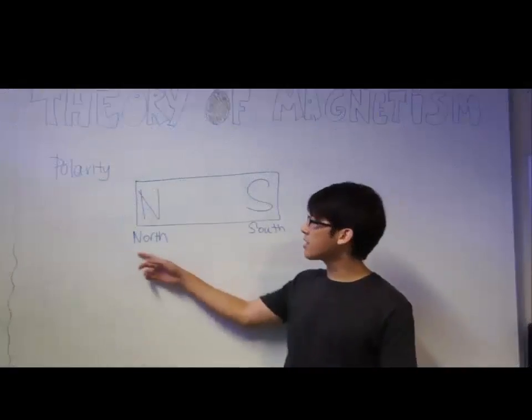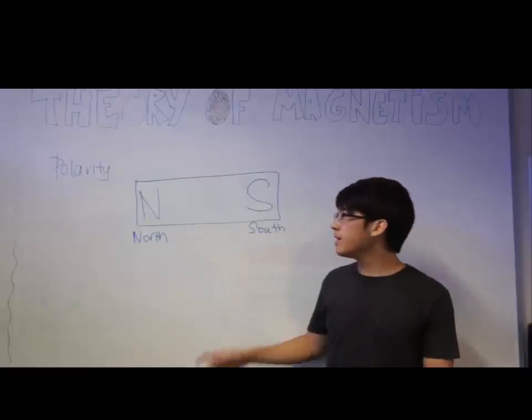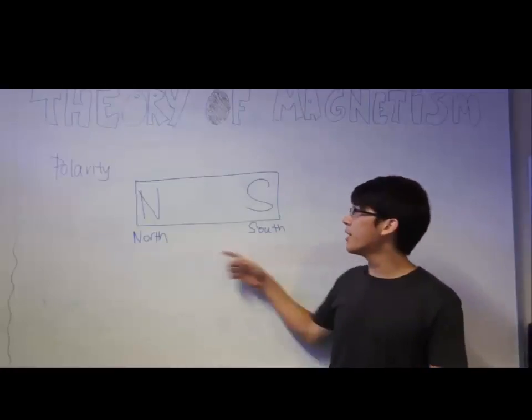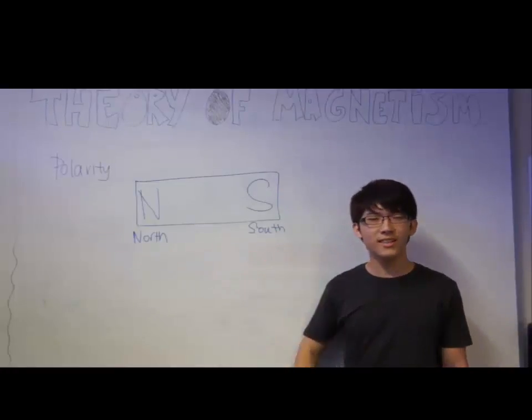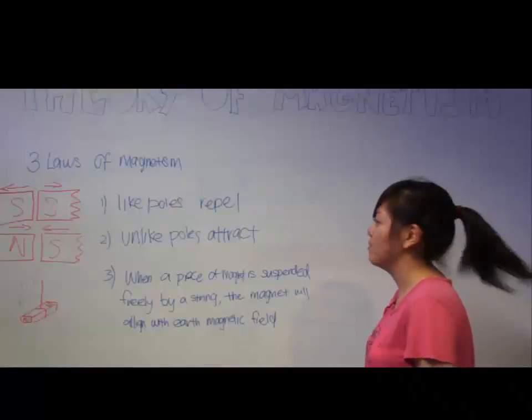We have now been talking about the polarity of the magnet. This is a picture representation of the magnet. The magnet mainly has two poles, the north pole and the south pole, which are located at the two ends of the magnet. Now we'll talk about the three laws of magnetism.